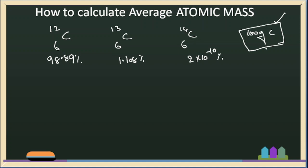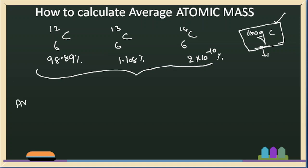If we have 100 grams of carbon, we have 98.89 grams of C-12 isotopes and 1.1 grams of C-13. We consider a very small amount for C-14. In our calculations, we are using the average atomic mass.